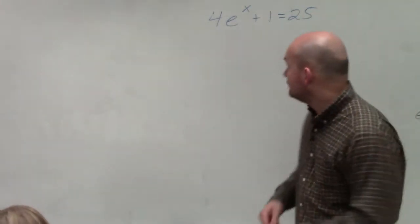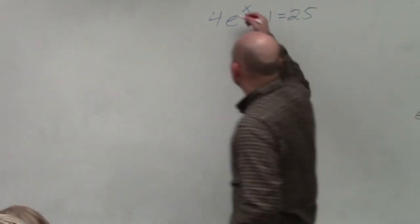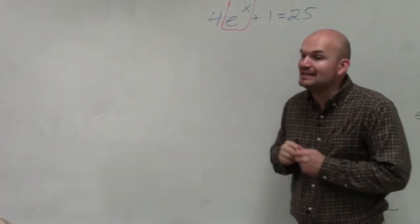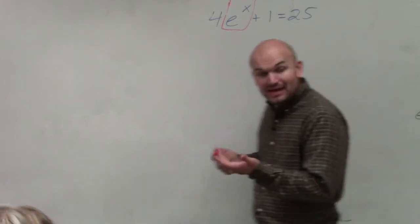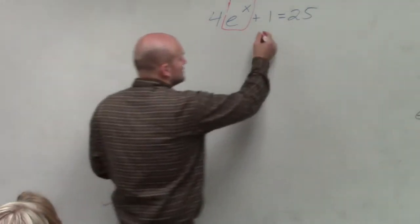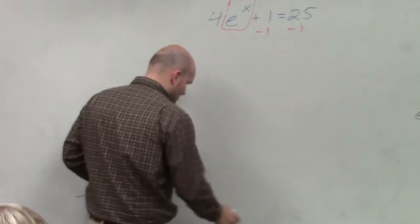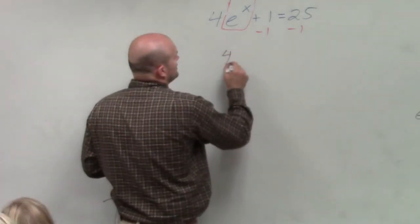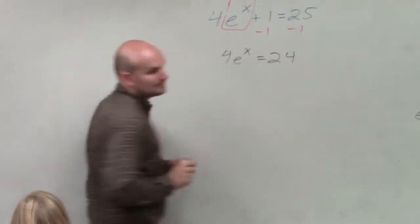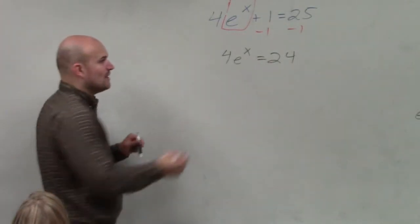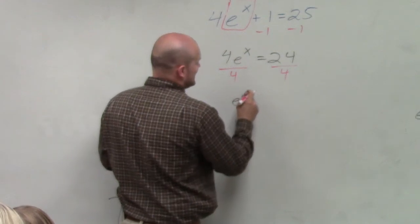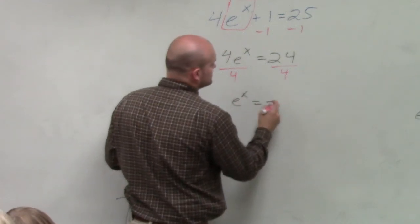So, Kelsey, if you notice that here is my exponent, I need to isolate that by applying the inverse operations. To apply the inverse operations, I need to first subtract 1. So, therefore, I have 4 times e to the x equals 24. Then I need to undo the multiply by 4, so I divide by 4. So, I have e to the x equals 6.